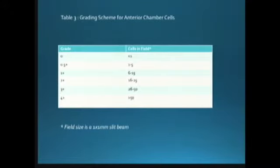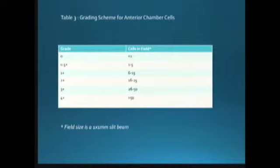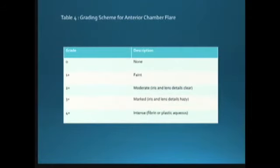In grading anterior uveitis, we look mainly at the cells. The SUN classification requires a specific beam size and illumination. Grading: plus one is 6-15 cells, plus two is 16-25, and plus four is more than 50. In the SUN classification, hypopyon is separately labeled — you say plus three with hypopyon. Previously plus four was hypopyon, but now you mention it separately. For flare: plus one is faint, plus two is moderate with iris and lens details clear, plus three when iris and lens details are hazy, and plus four when there is fibrin or plastic aqueous.